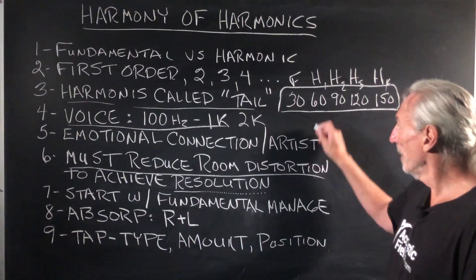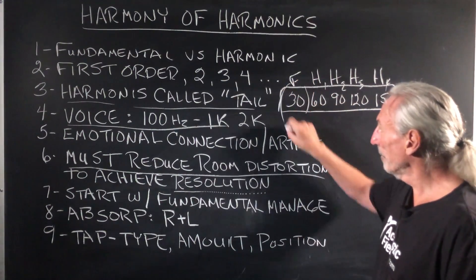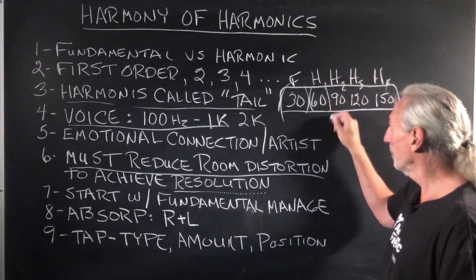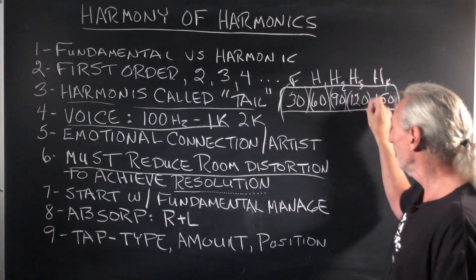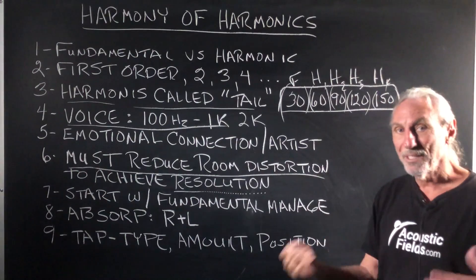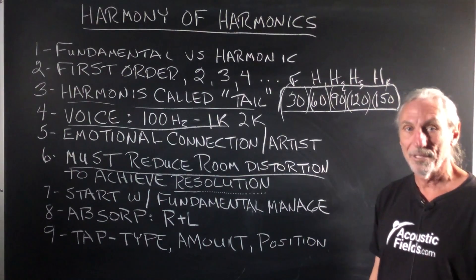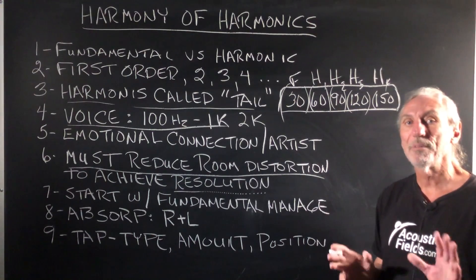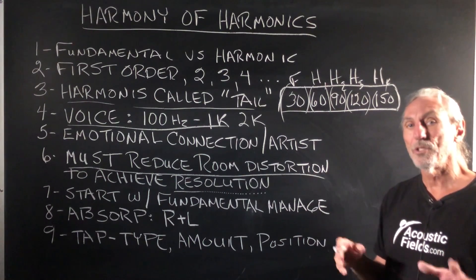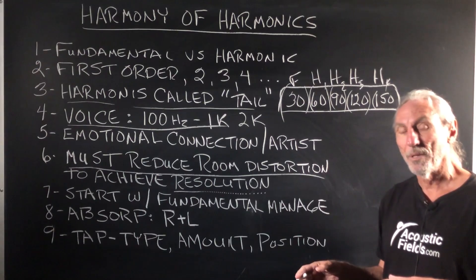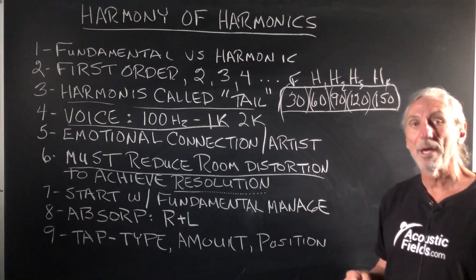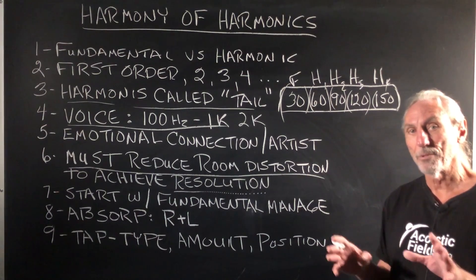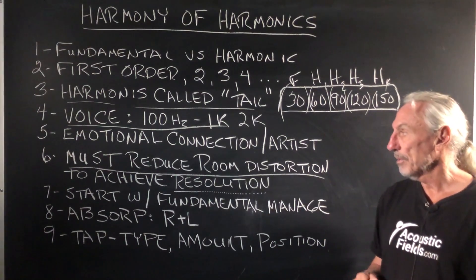If you over-absorb too much — I don't even know if that's possible at 30 cycles, but if you over-absorb too much at 60, 90, 120, 150 — things get pretty flat and lifeless. So you have to take just enough off to manage. We don't want to change the energy form; we just want to manage it. We have to reduce the amplitude, but how we reduce it — that's the critical part.